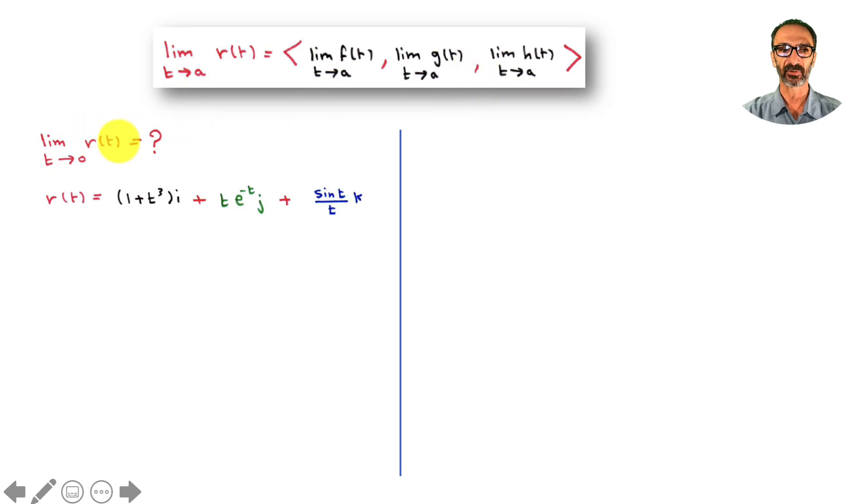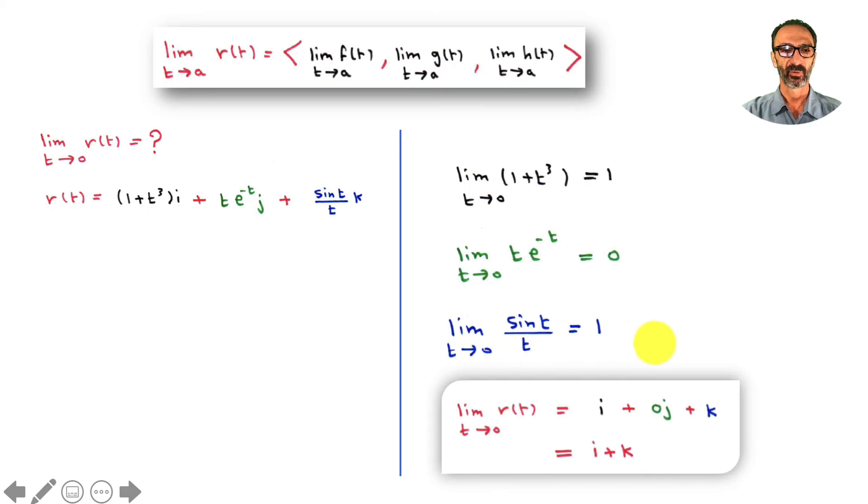As an example, what's the limit of r(t) as t approaches zero for the given vector function? I have it in different colors: that's f(t), that's g(t), and that's h(t). We'll take one by one. As t approaches zero, the first component gives us one. The second component, if you write it as t over e to the power t, t goes to zero, so the whole fraction will go to zero. The third component, which is a known function in trig and limits, the limit takes you to one. We're done. The limit of r(t) as t approaches zero is i + 0j + k, or in short, i + k.